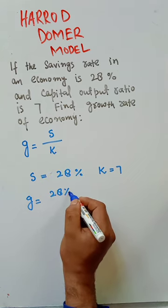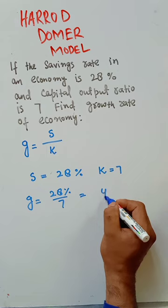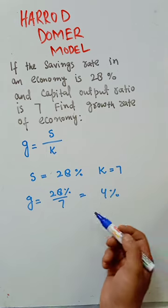28 percent divided by seven gives us four percent. That means growth rate for this economy will be equal to four percent.